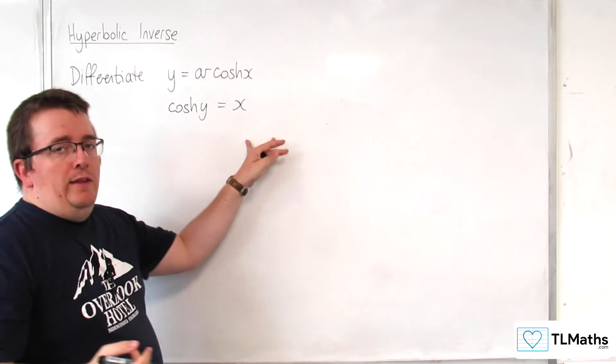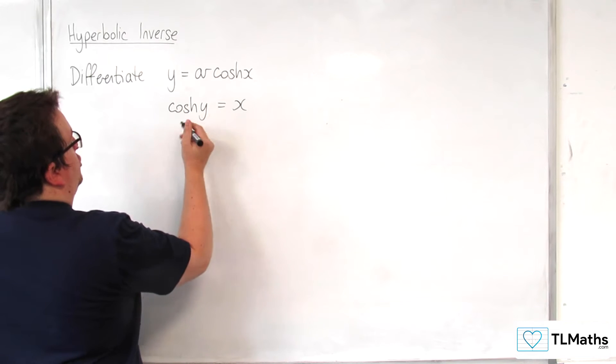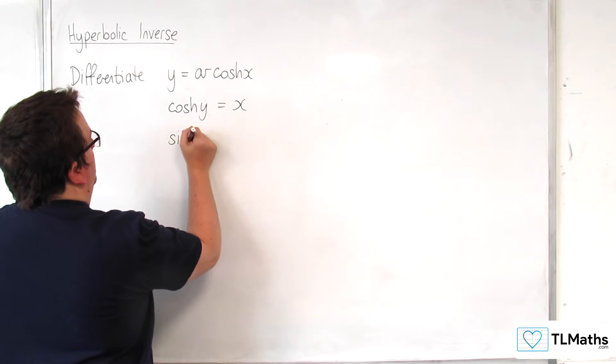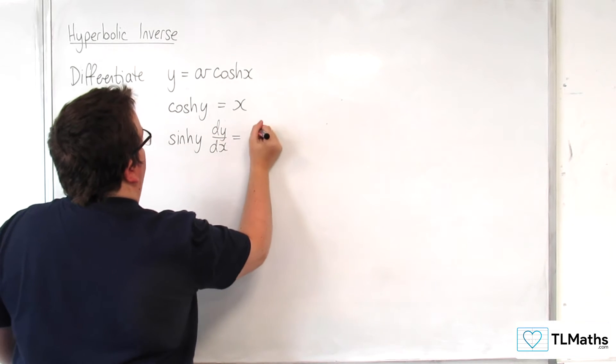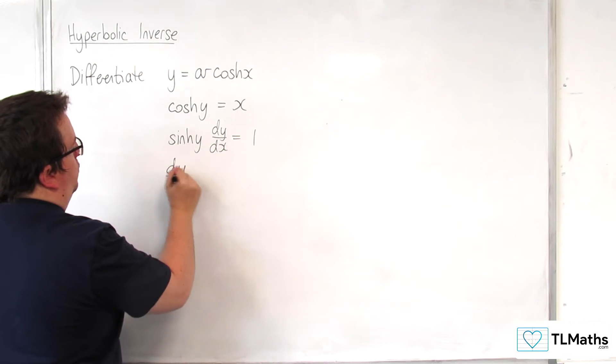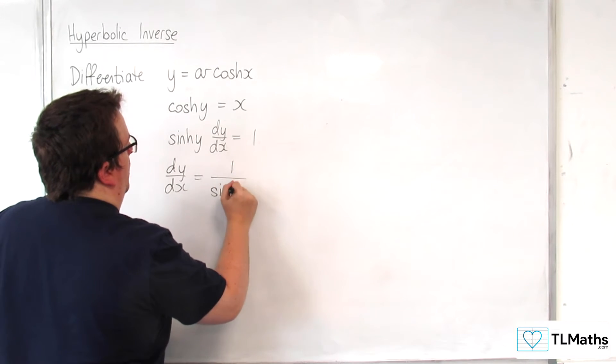We're going to differentiate this implicitly, differentiating both sides with respect to x. Cosh of y differentiates to sinh of y dy/dx. And the right hand side differentiates to 1. So we can write dy/dx as 1 over sinh of y.